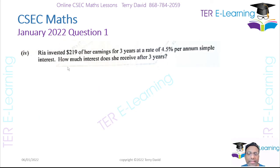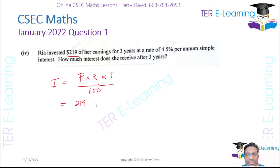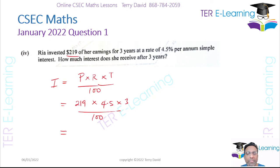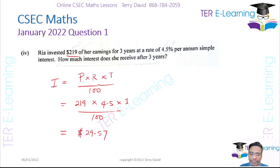This last part — she invested some money at simple interest. The simple interest formula is principal times rate times time, divided by 100. The principal is $219, the rate is 4.5, the time is 3 years, divided by 100. So that is 219 multiplied by 4.5 multiplied by 3, divided by 100, and I'm getting $29.57 as the simple interest.